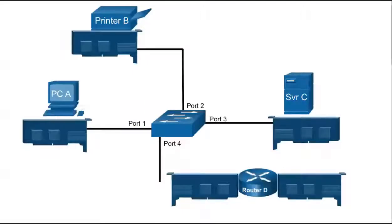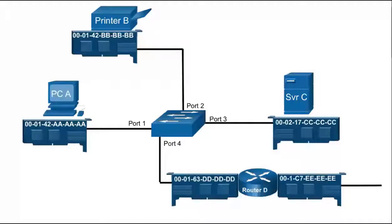Ethernet LANs use MAC addresses — media access control addresses — to accomplish the same thing. Every NIC, or network interface card, has a unique 48-bit MAC address embedded into the card, represented in hexadecimal notation. Also known as a physical address, the MAC address never changes and will be the same wherever the device is located.